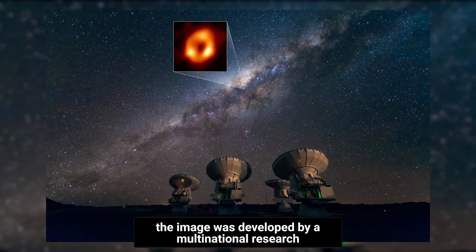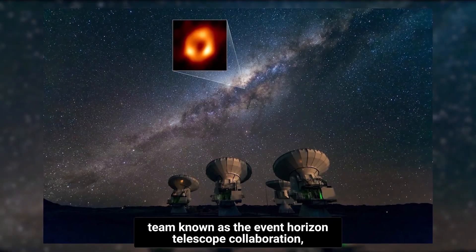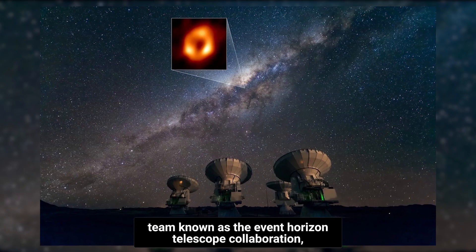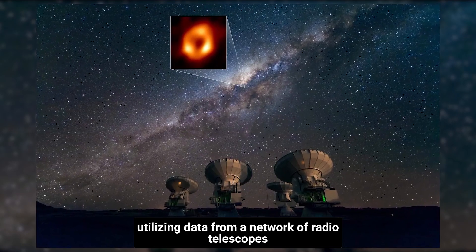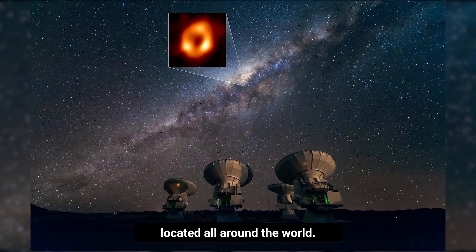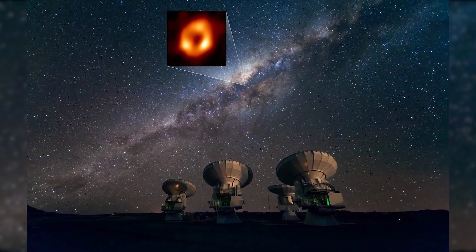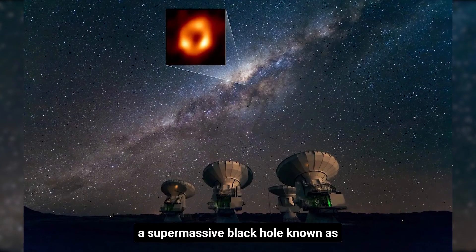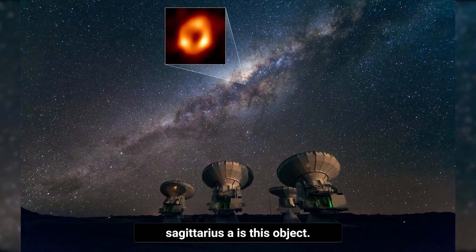The image was developed by a multinational research team known as the Event Horizon Telescope Collaboration, utilizing data from a network of radio telescopes located all around the world. A supermassive black hole, known as Sagittarius A, is this object.